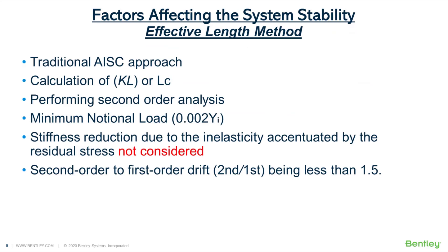AISC 360 specification 2005 permits use of any method that determines the required strength. Three standard approaches based on elastic analysis specified by AISC are: the effective length method, the direct analysis method, and the first-order elastic analysis method. The effective length method is a traditional approach requiring finding the effective length factor by alignment chart or by any procedure like buckling analysis. It requires consideration of second-order effects like P-large-delta and P-small-delta. Pre-2005, no notional load was required; from 2005 onwards, AISC specifies using a minimum notional load.